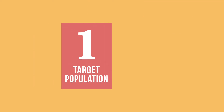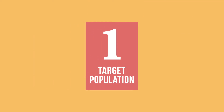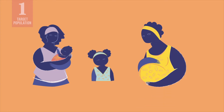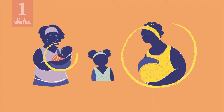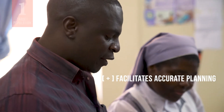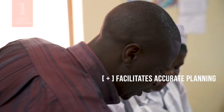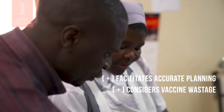Let us start with estimating by target population. Target population is the number of recipients within the targeted age groups, such as pregnant women and children for immunization with a vaccine. You can use this number to estimate vaccine needs for your area. This method typically facilitates the most accurate planning since it uses reliable demographic data.